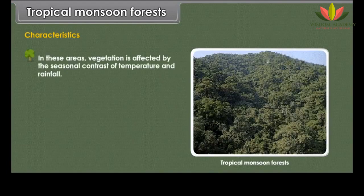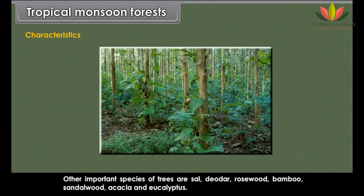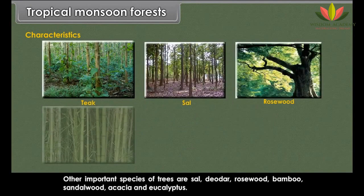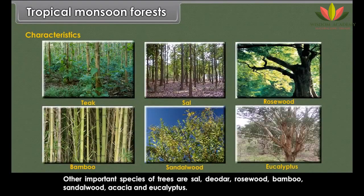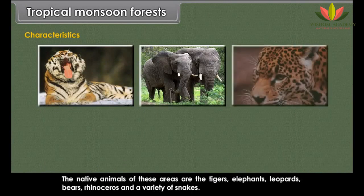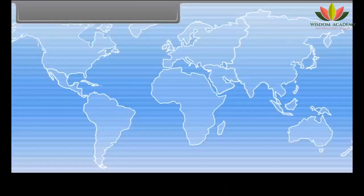Characteristics: In these areas, vegetation is affected by the seasonal contrast of temperature and rainfall. Trees shed their leaves in the dry season to conserve water and pick up new leaves in the rainy season. These forests are not very dense and the trees are of medium height. Teak is an important commercial timber. The native animals are tigers, elephants, leopards, bears, rhinoceros and a variety of snakes. Lions are found in the Gir Forests of Gujarat.